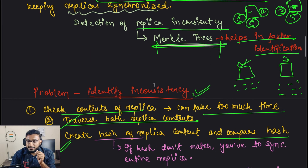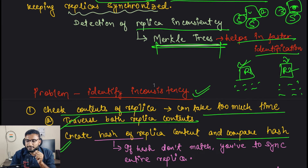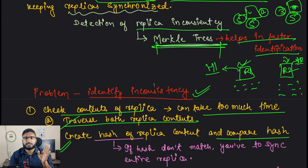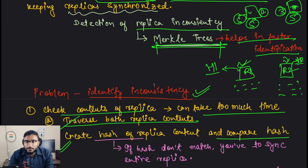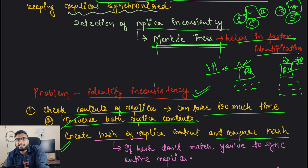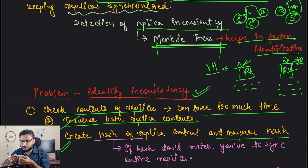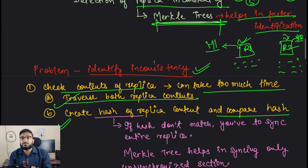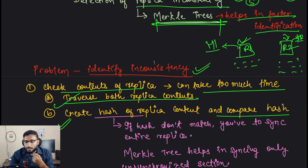If H1 and H2 are the same, we are good - the data is consistent. But if they are not equal, we are not aware of which specific data is inconsistent. We don't know which specific keys are causing the inconsistency. In Dynamo we are talking about keys, so we need to figure out which specific keys have caused the inconsistency - but a simple hash comparison doesn't tell us that.